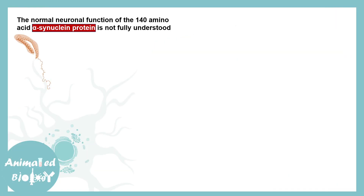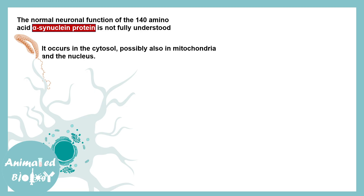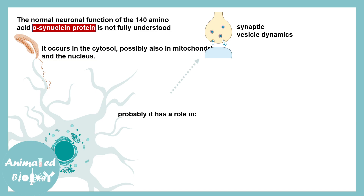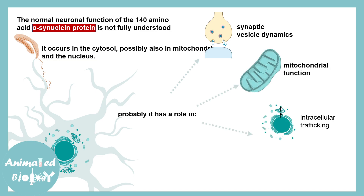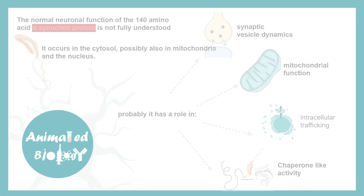Alpha-synuclein protein — how it functions is not fully understood. But in normal scenarios, it is associated with synaptic vesicle dynamics, mitochondrial function, intracellular trafficking, and chaperone-like activity. And all of these things go wrong in Parkinson disease.